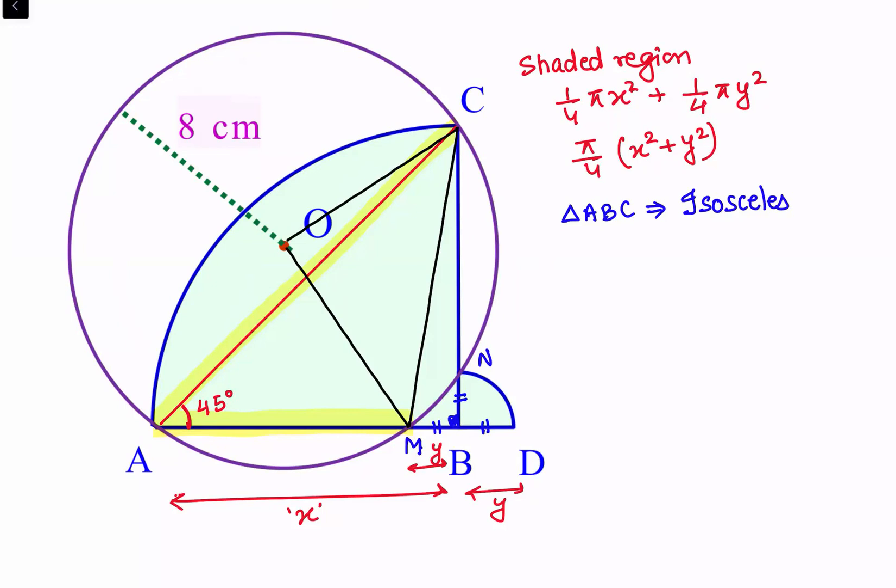Now OC is 8 centimeters. MO is also the radius, so MO is 8 centimeters. How about MC? By Pythagoras theorem, MC will be 8√2 centimeters.